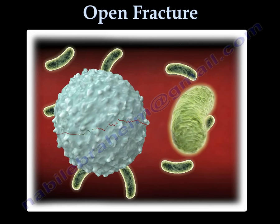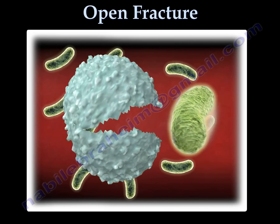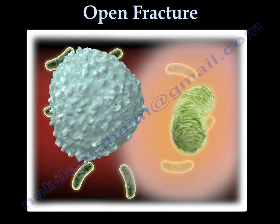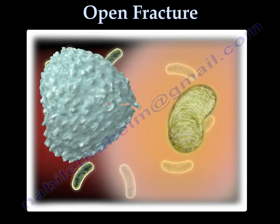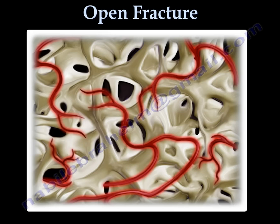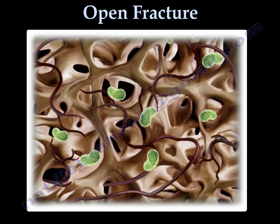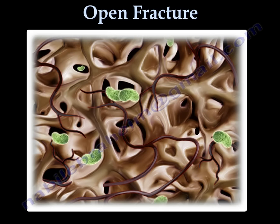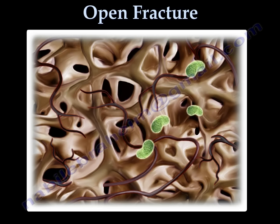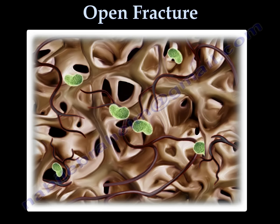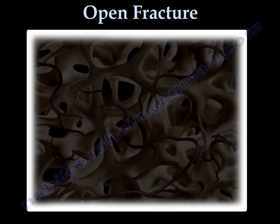Other types of bacteria can also produce a thick capsule that prevents them from being engulfed. Bacteria may also produce toxins used to destroy cells that try to attack them. Bacteria can also hide in dead bone or bone cells, causing antibiotics or white blood cells to be unable to reach the bacteria, since the dead bone has no blood supply.